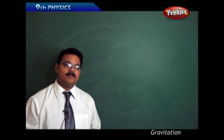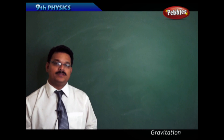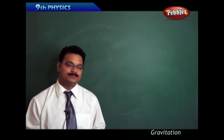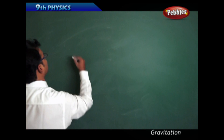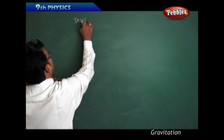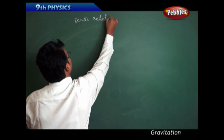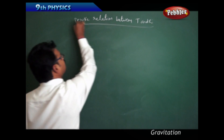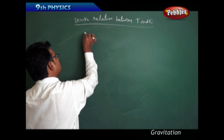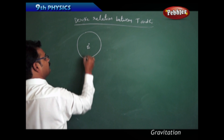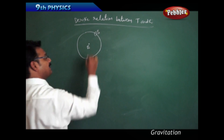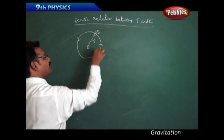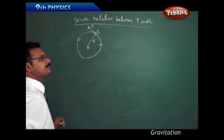Now we're going to find the relationship between the radius of the circular path and the time of revolution around a massive object. I want to derive the relation between T and R. This is the circular path, this is the Earth, and this is a satellite revolving around the Earth with radius R in a circular path, and this is its velocity.